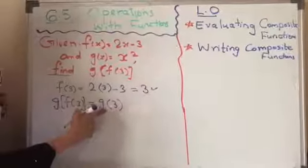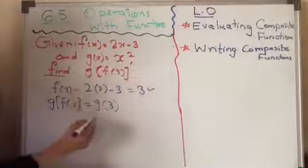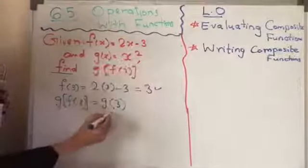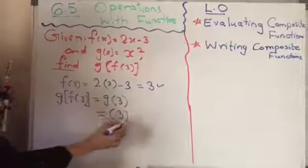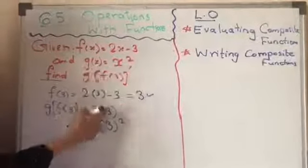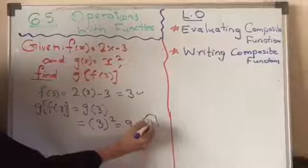g of 3 means in g, the rule g, you have to give in place of x 3. We need to substitute. So it's going to be x square. So 3 square because I have to substitute x as 3. So 3 square is 9. That's it. We stop.